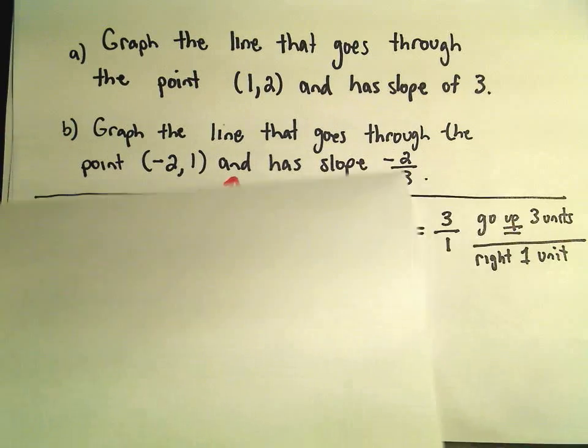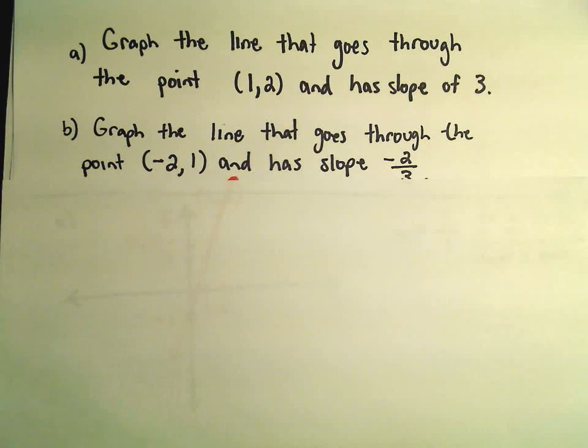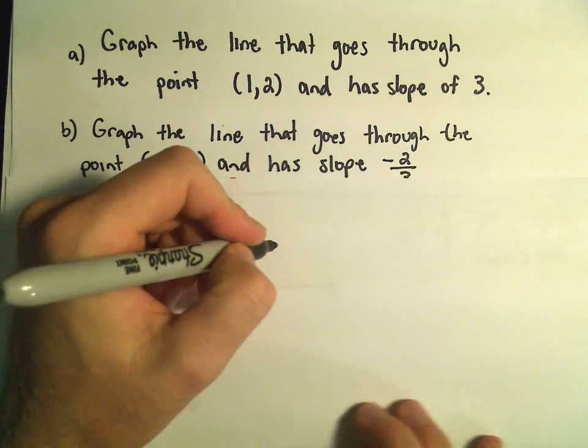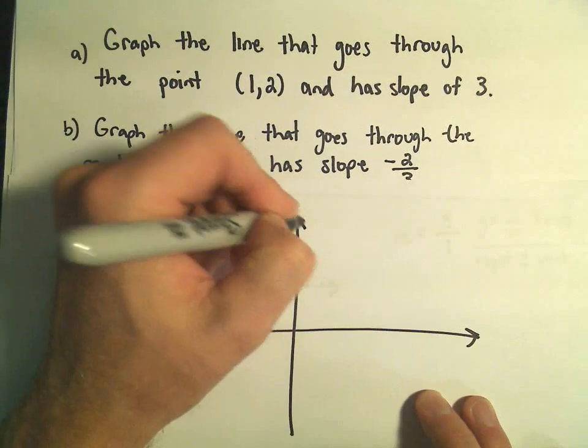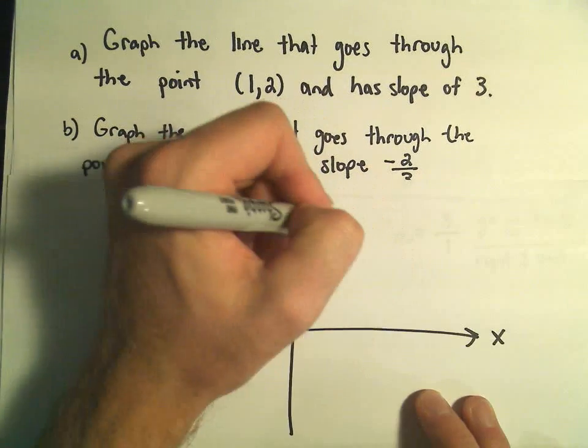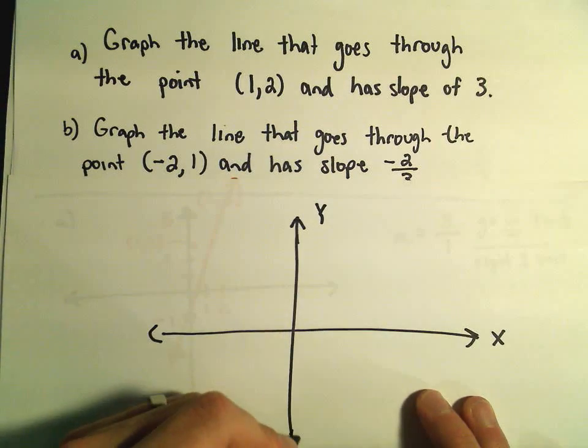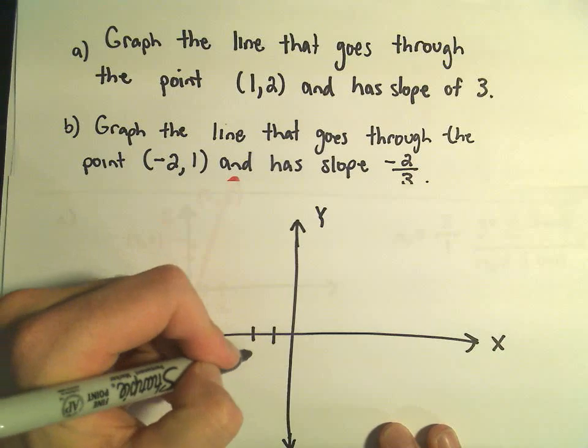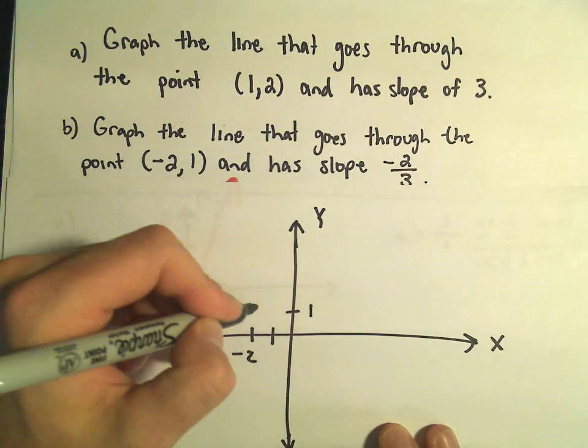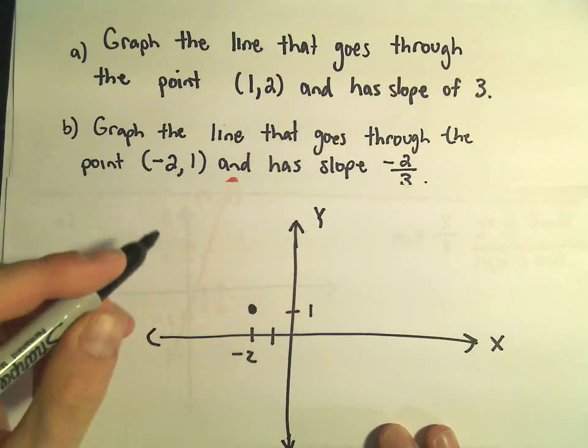Let's do this other one here real quick. We want to graph the line that goes through the point, so I'm going to give myself a little more space here. We want it to go through negative 2, 1. So negative 1, negative 2. And I go up positive 1 unit.